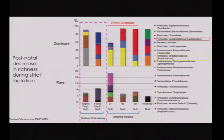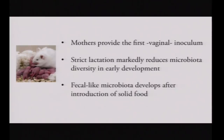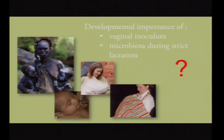Looking at the taxa, in the top panel we have dominant taxa and the rare taxa. We can see that babies are born high in streptococci, which decreases and coincides with a bloom in lactobacilli. So mothers provide the first vaginal inoculum, strict lactation markedly reduces microbiota diversity, and a fecal-like microbiota develops after the introduction of solid food.